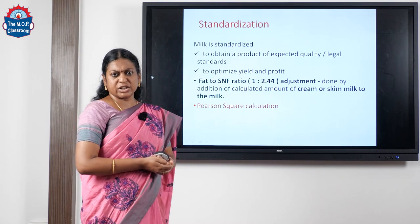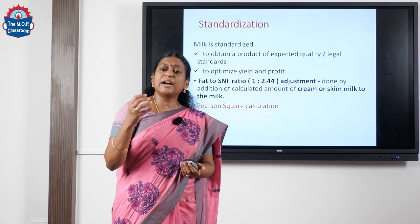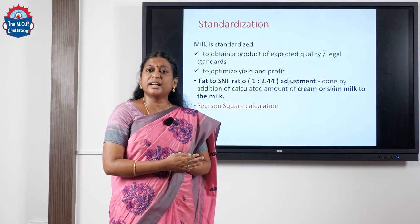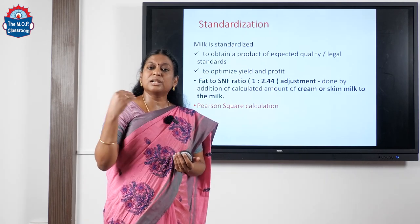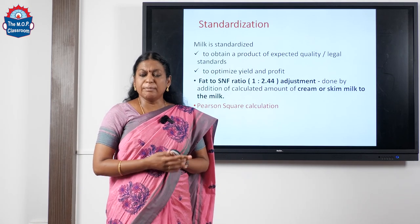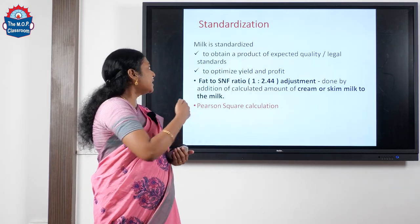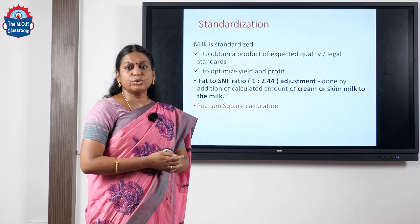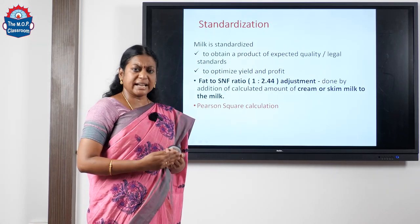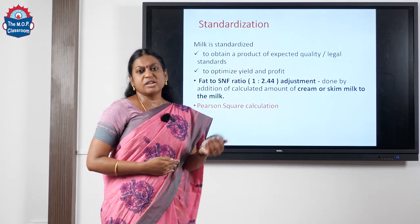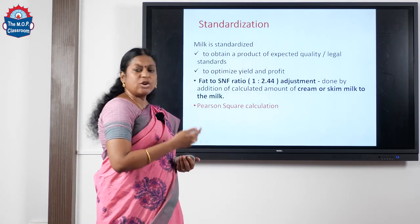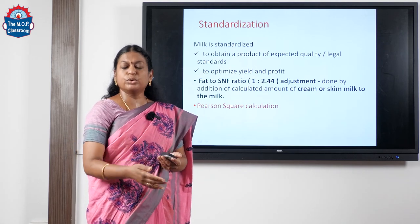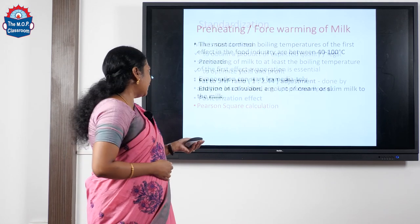Moving on to standardization: we have a particular legal standard for any milk product, and the Codex standard requires 8% milk fat and 28% milk solids. So we standardize our fat and SNF ratio, which is usually 1:2.44. We standardize either by adding cream or skim milk to our milk, and we all know about the Pearson square calculation which we do for deriving the fat and cream values.